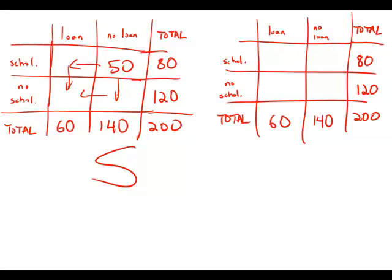So everyone who said they received a loan, that's 60. 50% of them said they had received a scholarship and 50% said they hadn't. So 30 said they received a scholarship and 30 said they didn't receive a scholarship.